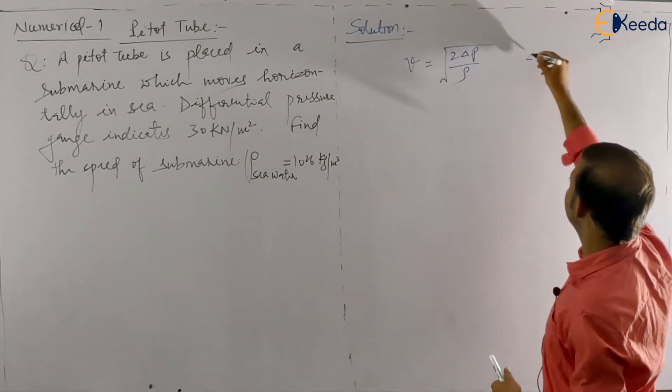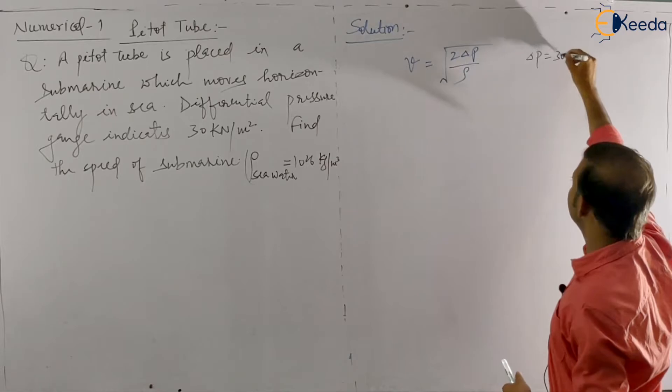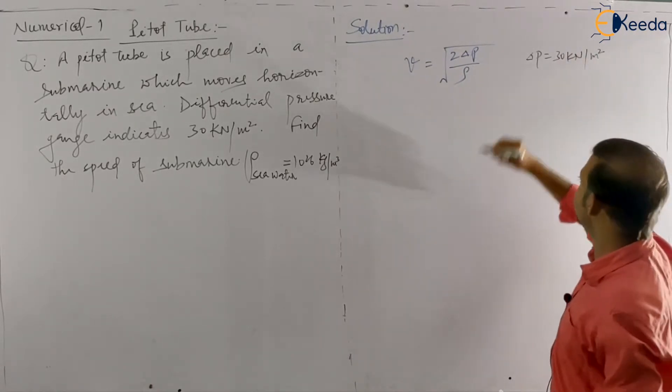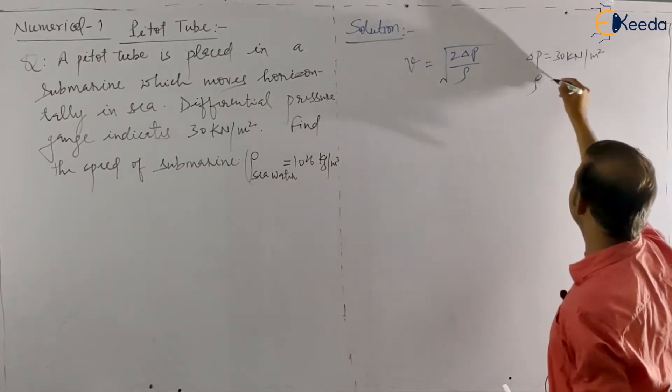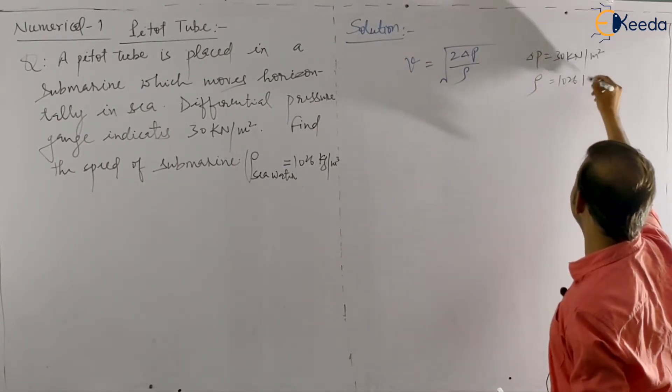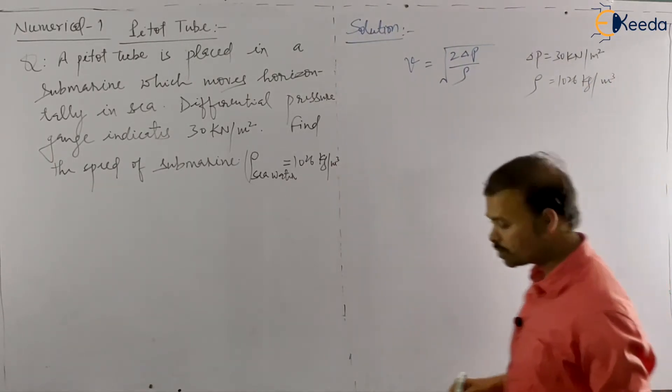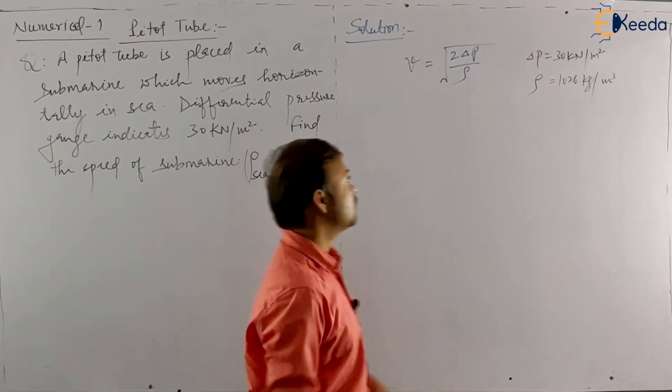Delta P is nothing but 30 kN per meter square. And rho is given. Rho sea water is 1026 kg per meter cube. Everything is known. You can calculate V.